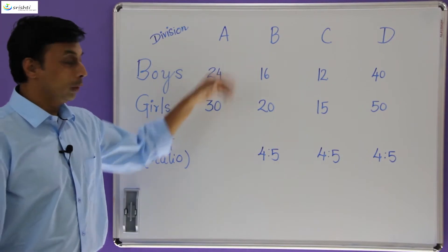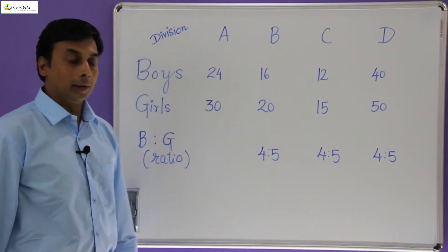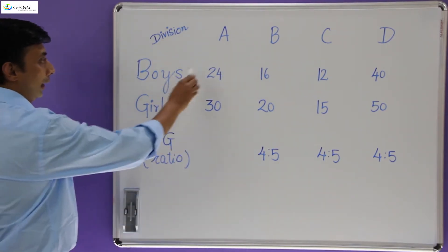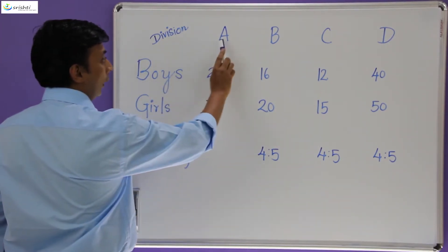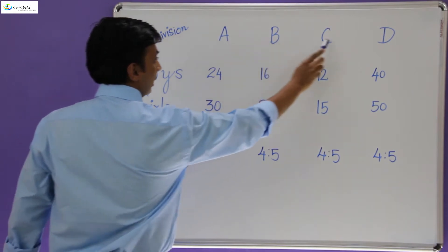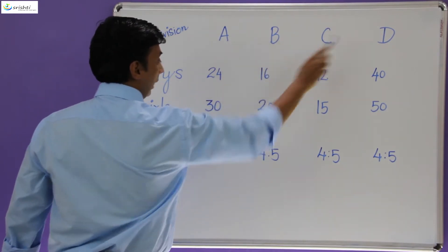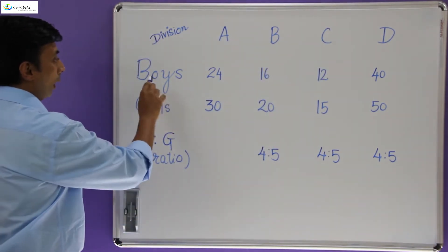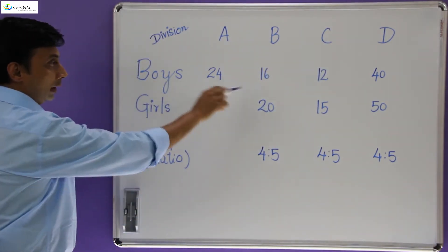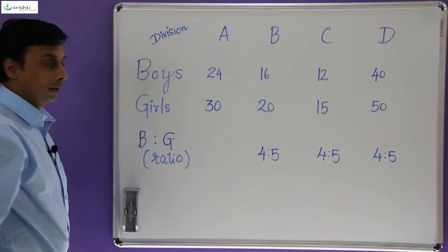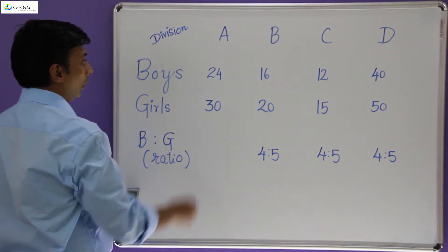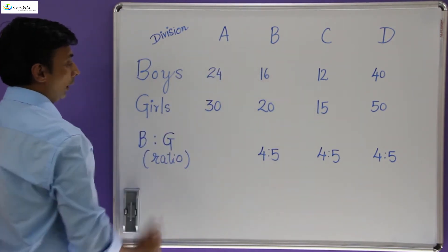So now I am going to show you the concept of common ratio. Assume that there is a school and there are four divisions in a particular standard — A, B, C, D — and this table lists out how many boys and girls there are in each division.